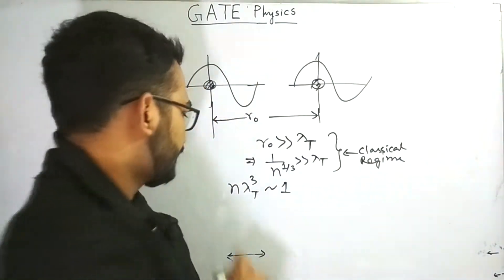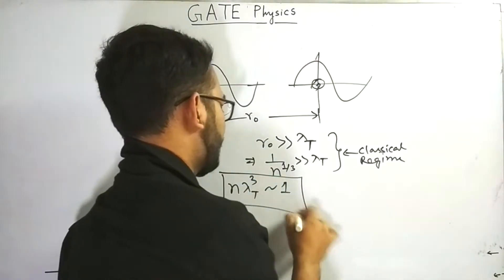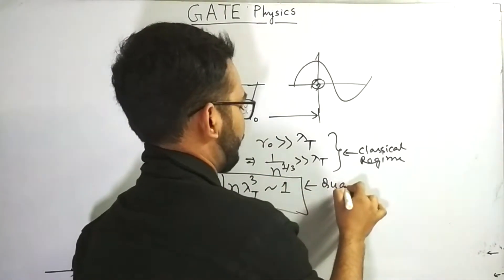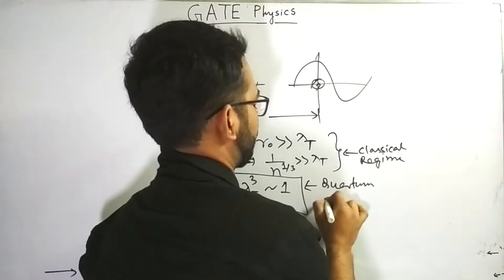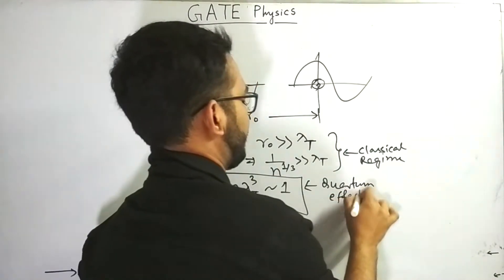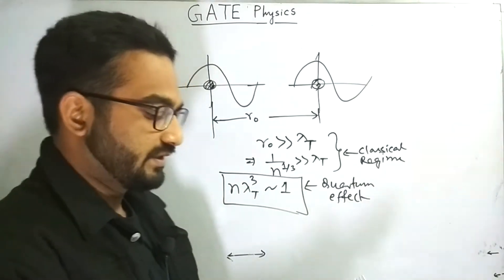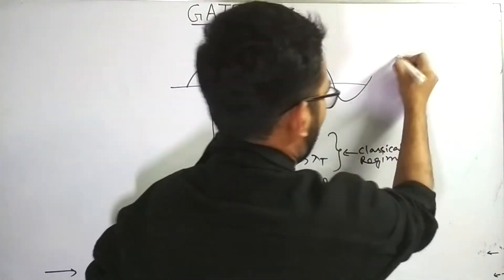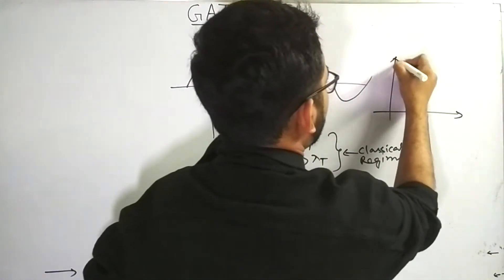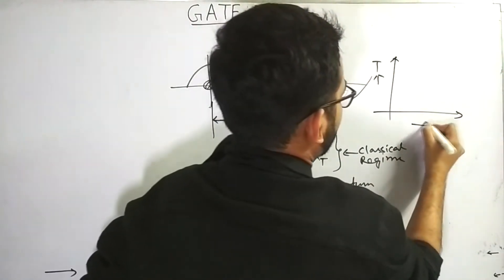So this is the case when quantum effects predominates. So we get quantum effect. Now, if you want to plot it, what we can plot? T versus n. We can plot T versus n, temperature versus number density.